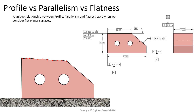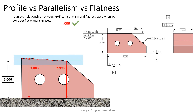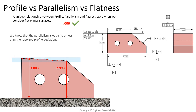A unique relationship exists between profile, parallelism, and flatness when we consider a flat planar surface. Profile of a surface controls location, orientation, and form; we refine orientation with parallelism and refine form with flatness. If we take CMM measurements and get a point cloud representing the top surface — for example, the highest point was at 3.003 and the lowest at 2.998 — we have a profile deviation of six thousandths because the most deviated point was three thousandths away from true profile. With a profile of six thousandths, our parallelism will also be at least that — likely less, but we won't know for sure.